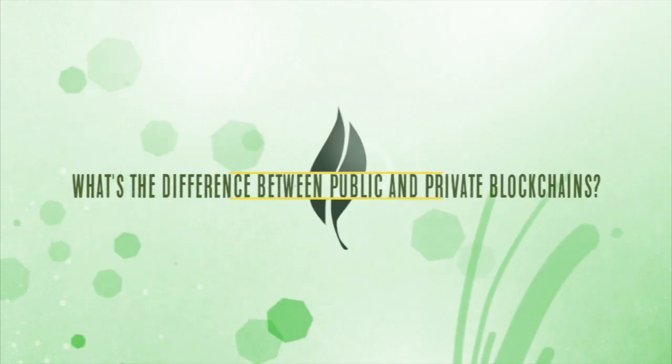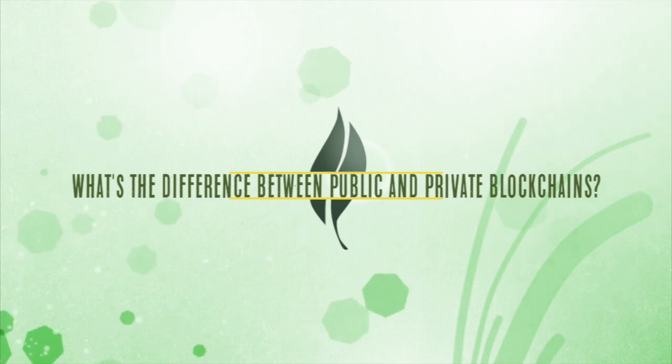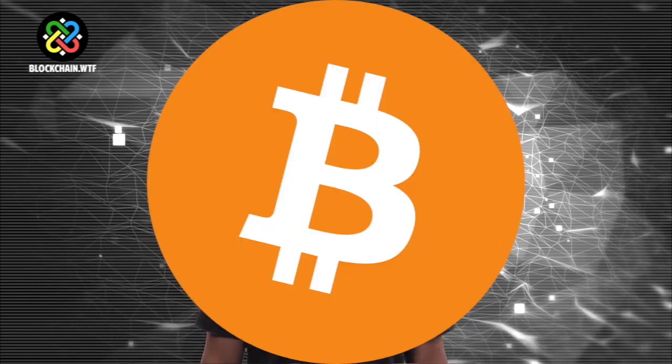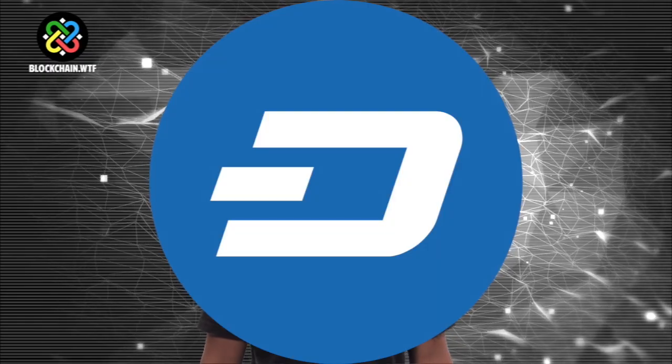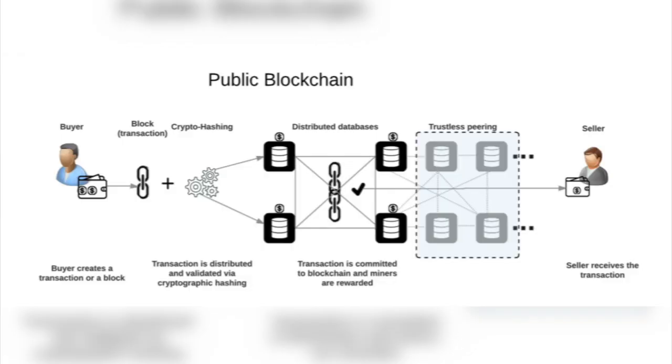So what is the difference between public and private blockchains? The blockchains we are more familiar with today, such as Bitcoin, Ethereum, and Dash, are all public blockchains in the sense that access is open to anyone.